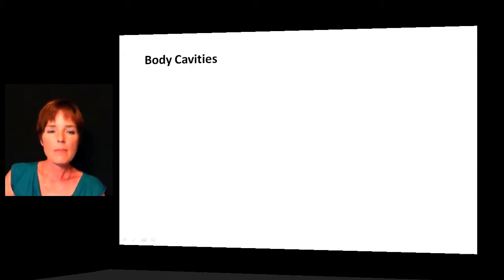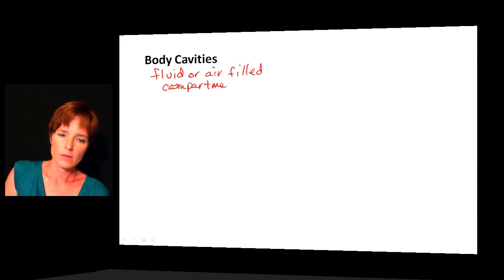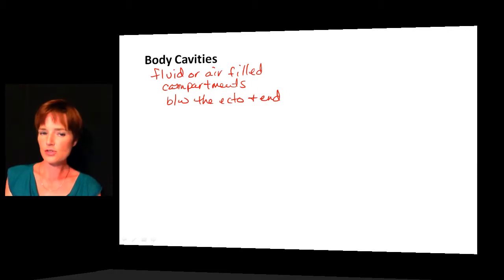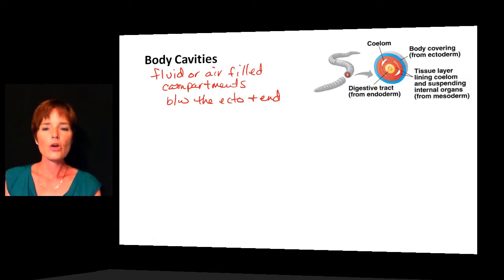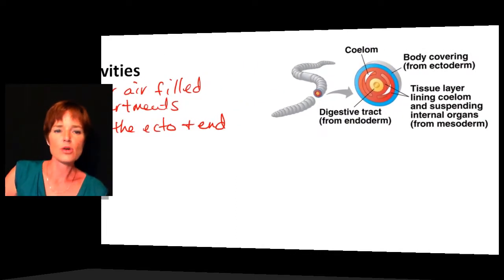If we talk about body cavities, body cavities are fluid- or air-filled compartments between the ectoderm and the endoderm — in other words, between the body wall and the digestive tract. This is some kind of open space inside the organism. We can classify organisms depending on the presence of the body cavity or its structure. This body cavity is something unique to triploblastic organisms.